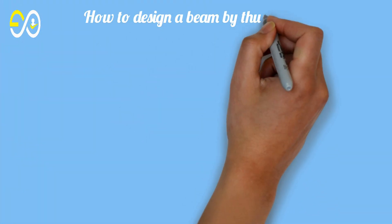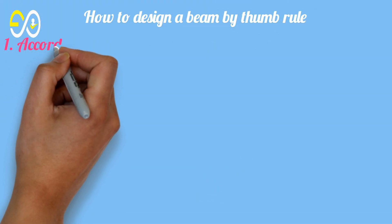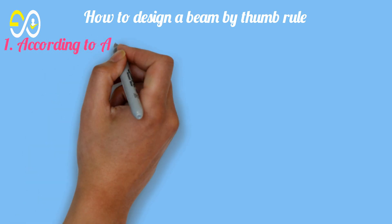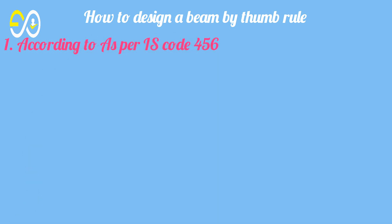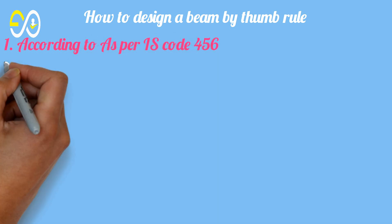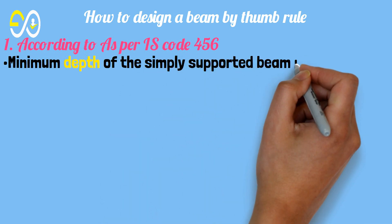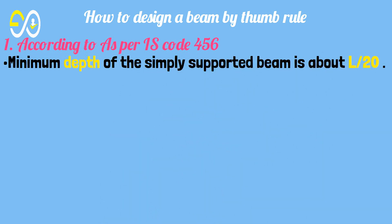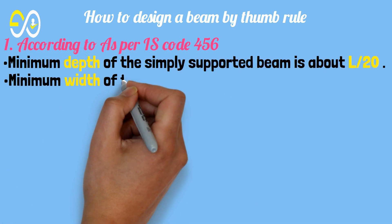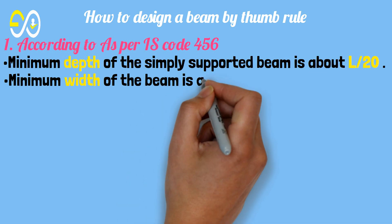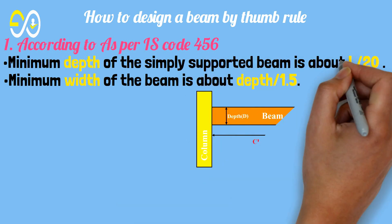How to design a beam by thumb rule. According to IS code 456, the minimum depth of a simply supported beam is about L over 20. The minimum width of the beam is about depth over 1.5.